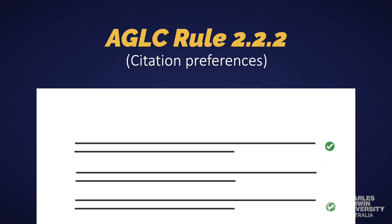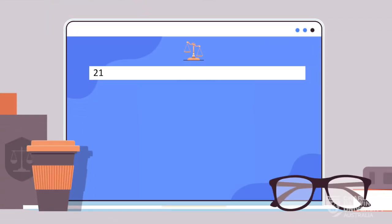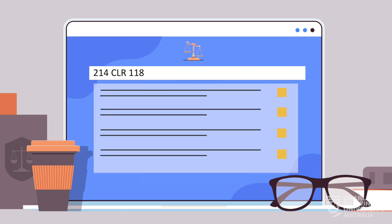See the AGLC for a full list of law report abbreviations. Reports marked with an asterisk are the authorised reports. You can use a case citator, available on the Law Guide, to quickly search and see the list of places a case has been published.